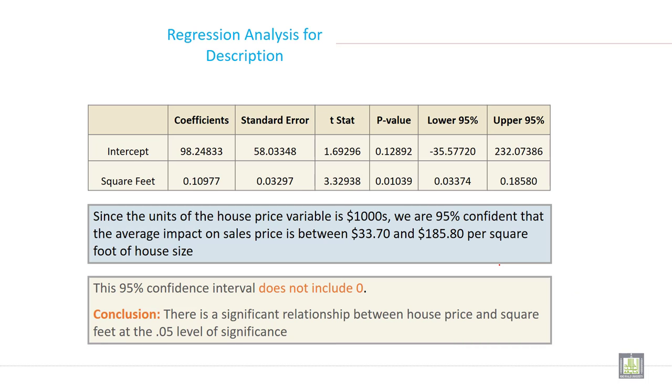This is from the Excel output. Since the unit of the house price variable is $1,000, we are 95% confident that the average impact on sale price is between $33.77 and $185.80 per square foot of house size. It varies between the lower limit and upper limit.